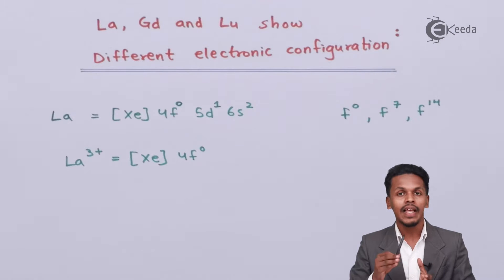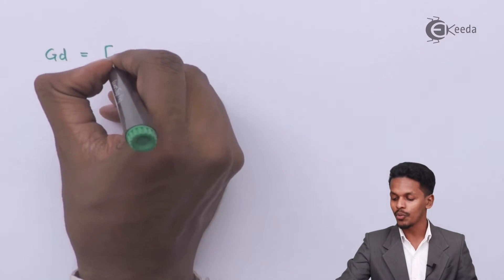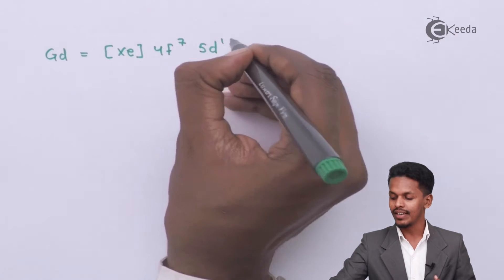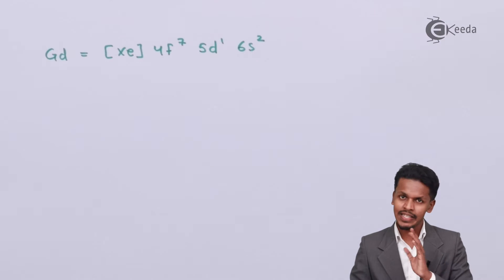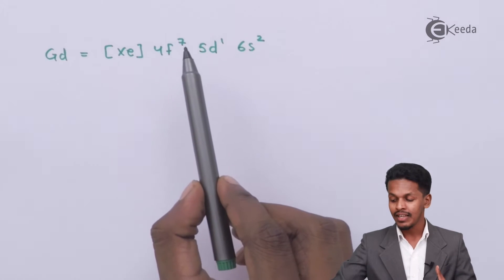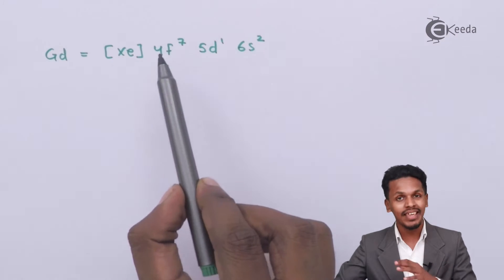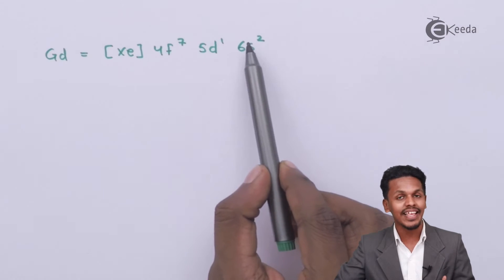Now let us discuss the same reasoning for gadolinium. The electronic configuration of gadolinium was discussed in the previous topic and was found to be [Xe] 4f⁷ 5d¹ 6s². Since it is an f-block element, the last electron should normally enter the f orbital, which would give a configuration of [Xe] 4f⁸ 5d⁰ 6s². However, the last electron does not enter the f orbital.